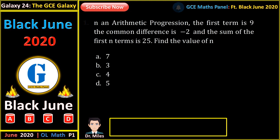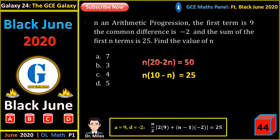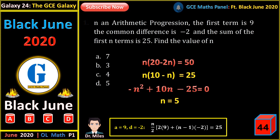In an arithmetic progression, the first term is 9 and the common difference is minus 2. The sum of the first n terms is 25. Find the value of n. The sum of the first n terms is n on 2 times (2a plus (n minus 1)d). This gives n times (20 minus 2n) equals 50. Dividing by 2: n times (10 minus n) equals 25. Expanding gives a quadratic, and solving gives n equal to 5.